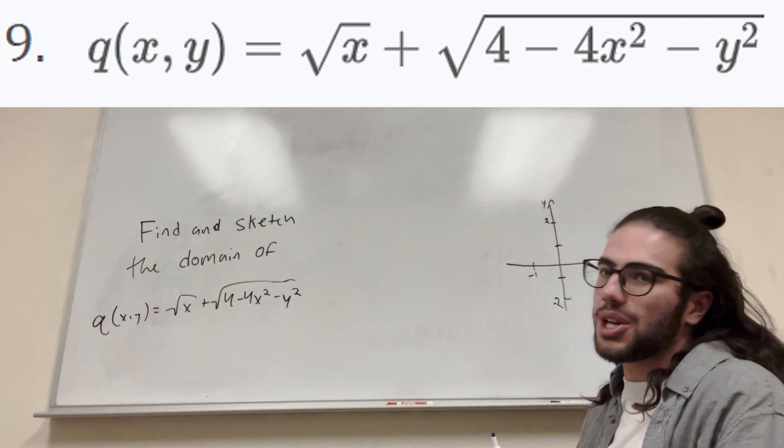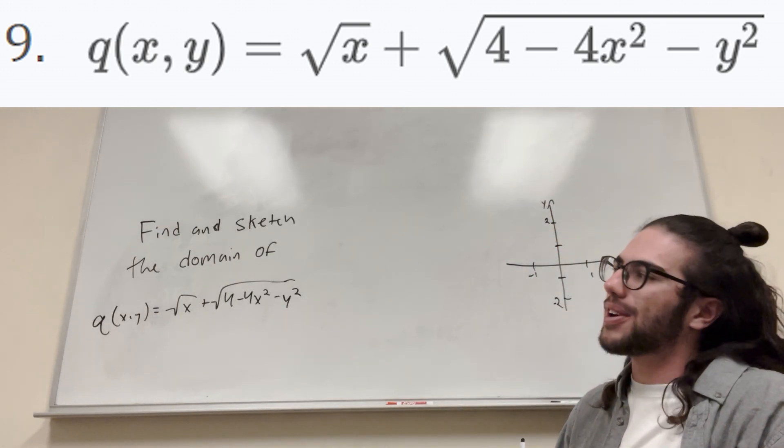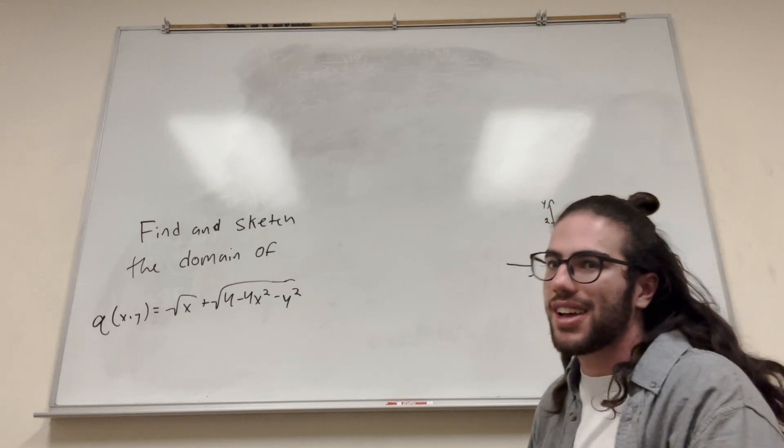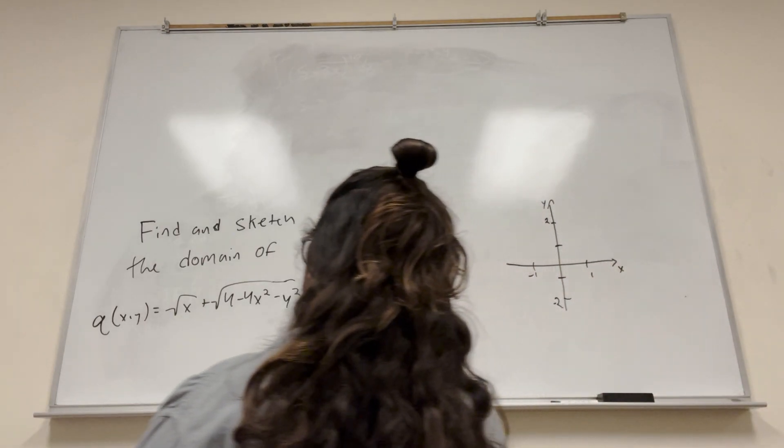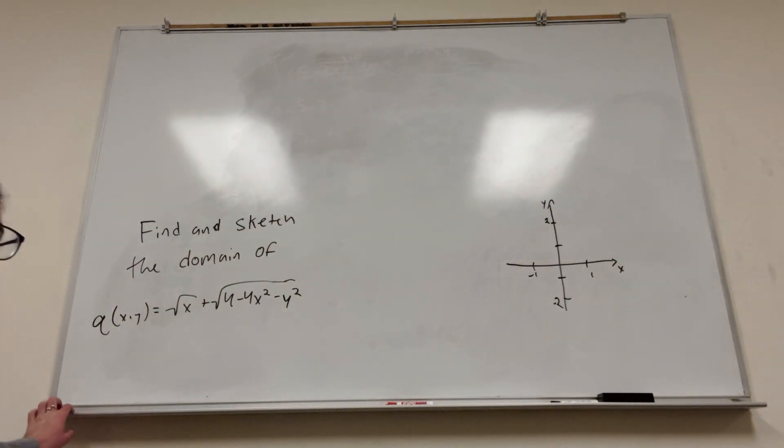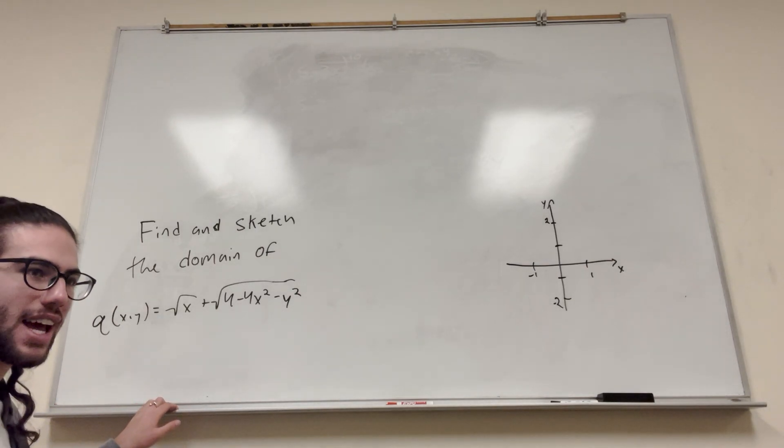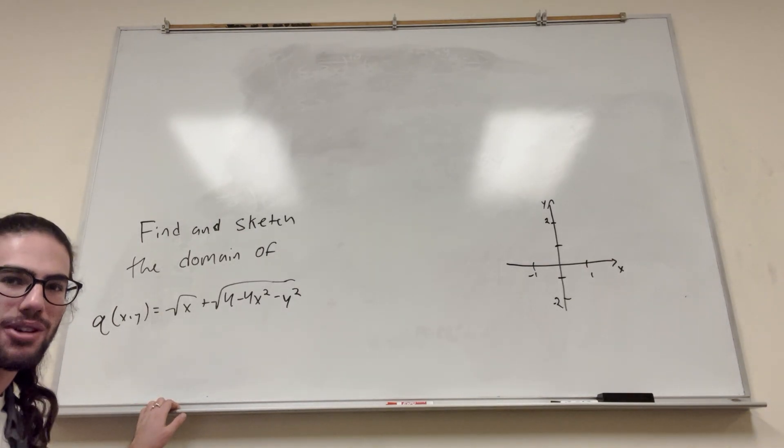So when you're finding the domain of a function, you want to find where it doesn't exist, basically where the line is not defined, where the area doesn't work. When you have square roots, that's pretty nice, right? You know with square roots that they can't be negative. You can't have a negative number inside of a square root.